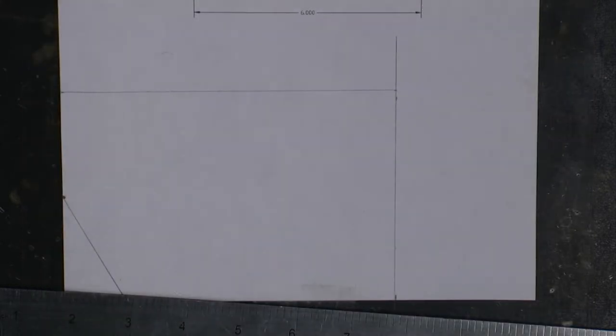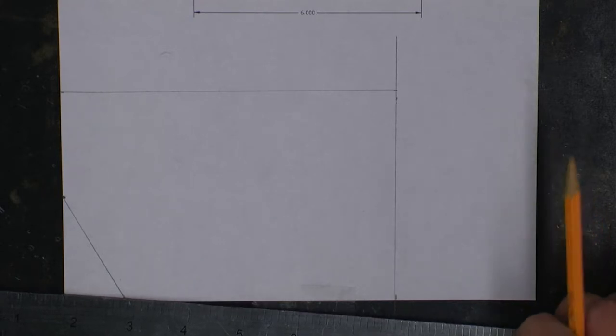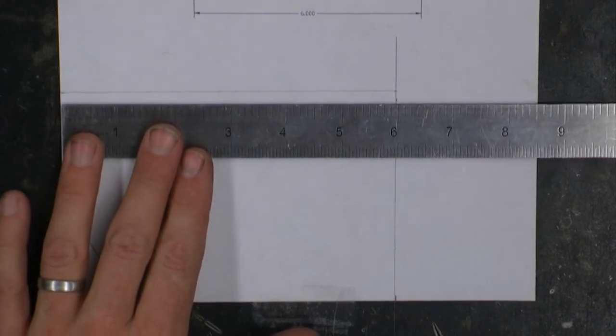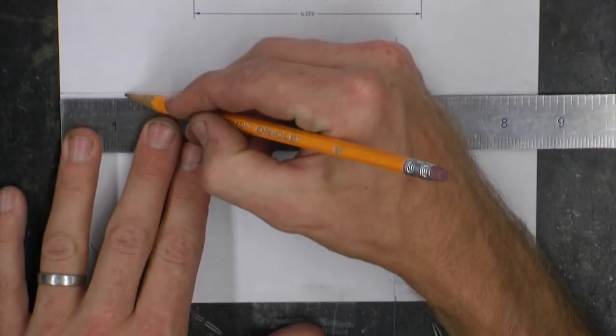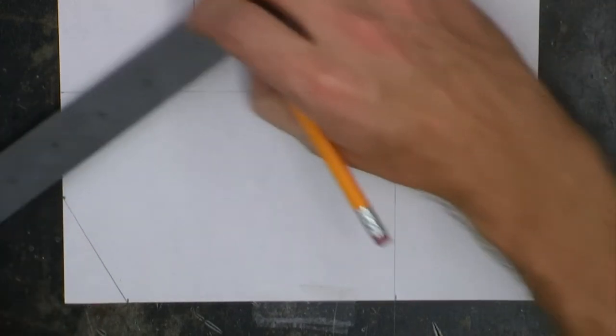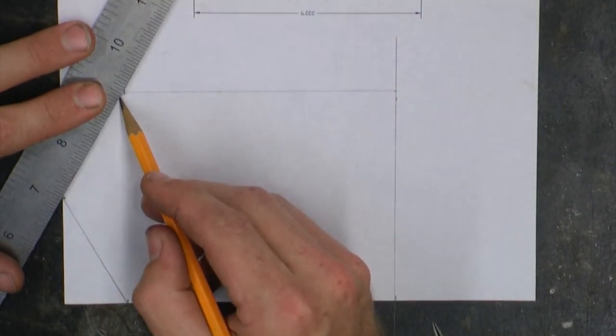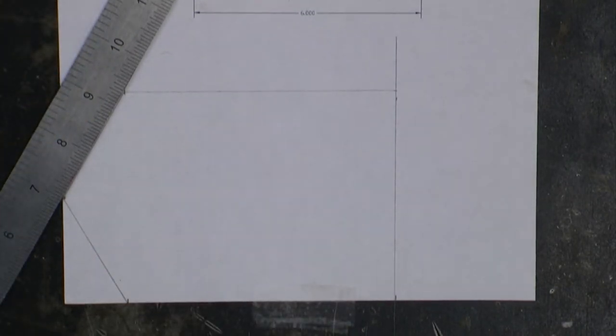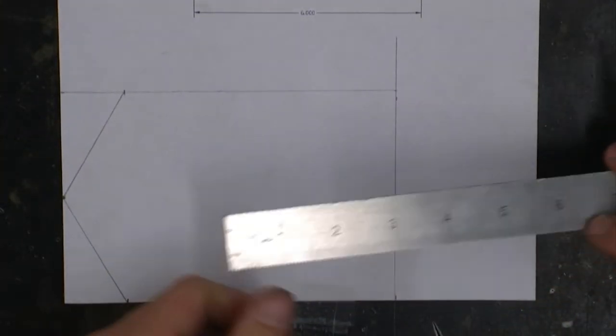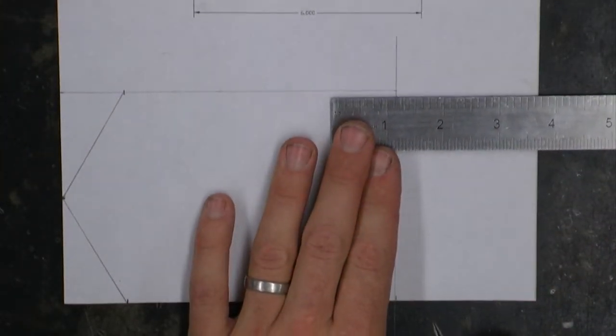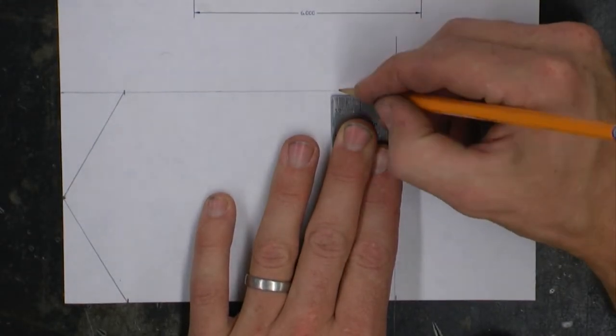We are going to create another reference line towards the top of the drawing at 1.125 inches. And then we'll connect those together as well. And we can continue this for the other side of our drawing.